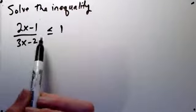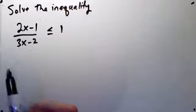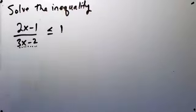Multiplying by a negative or dividing by a negative means we have to reverse the inequality. Since I don't know in advance what sign that term there is going to take, 3x minus 2, that'd be a bad idea to multiply by that.